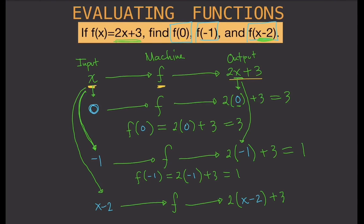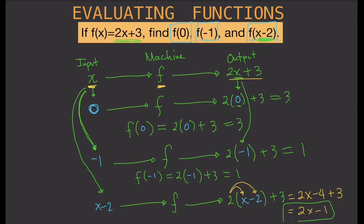Now we make calculations. We distribute: 2 times x minus 2, plus 3. That gives us 2 times x equals 2x, and 2 times negative 2 equals negative 4, plus 3. So 2x minus 4 plus 3 equals 2x minus 1. That is our final answer — the output is 2x minus 1.